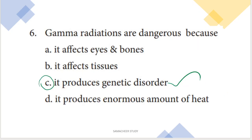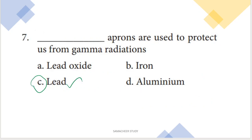Gamma radiations are dangerous. Among all radiations, the main effect of gamma radiation is genetic disorder. It produces genetic disorders and hereditary problems. So option C is the right answer — gamma radiations are dangerous because they cause genetic disorders.